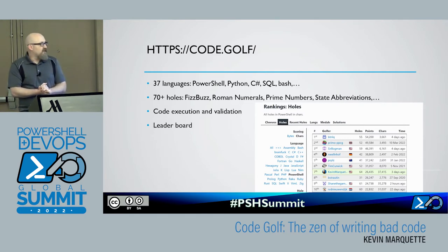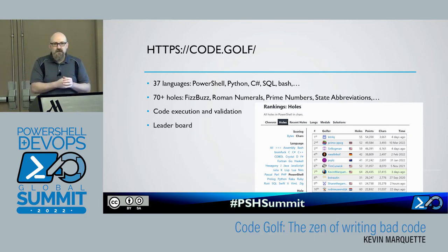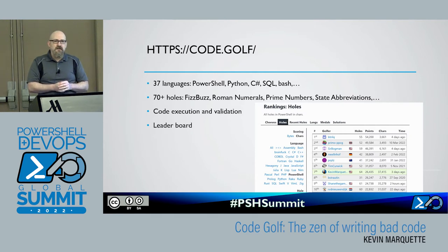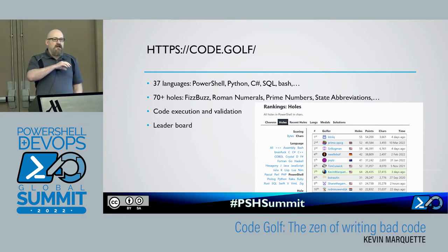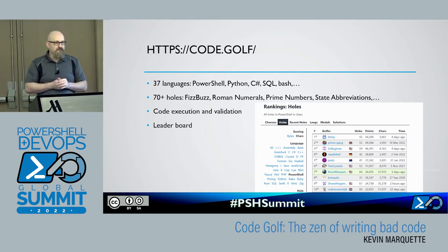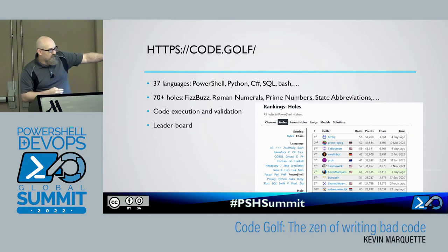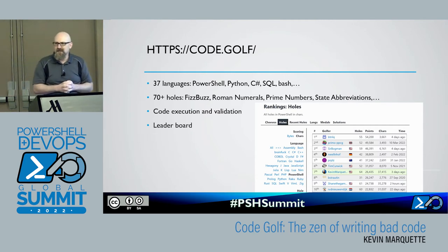One code golf site in particular is code.golf. I like this site because it supports lots of languages — not just PowerShell, but Python, Bash, even SQL. They've got a good selection of holes that they're adding quite often, and you can submit pull requests if you come up with a clever hole. The site does code execution and validation — you submit your code, it runs in a container, checks the output, and scores your entry. It also has a leaderboard so you can see how you rank per language or per hole.